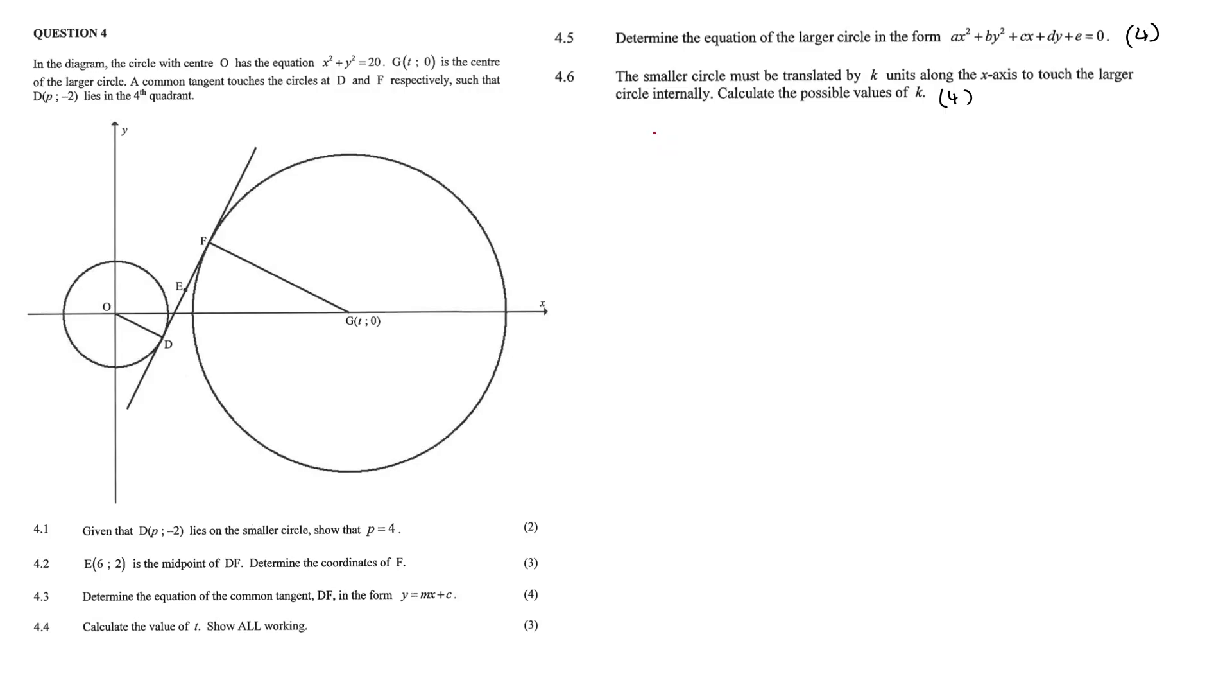Hi guys, today we're going to be looking at a functions, well, an analytical geometry question. In the diagram, the circle with center O has equation x squared plus y squared equals 20. G with coordinates t and 0 is the center of the larger circle. A common tangent touches circles at D and F respectively, such that D with coordinates p and negative 2 lies in the fourth quadrant.